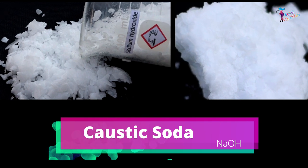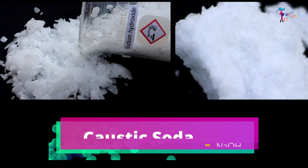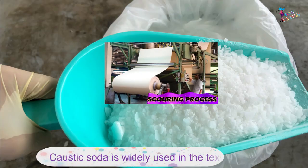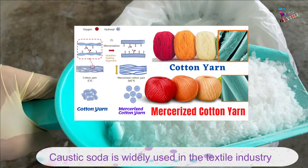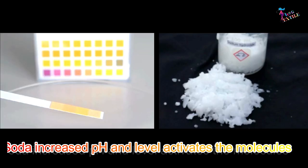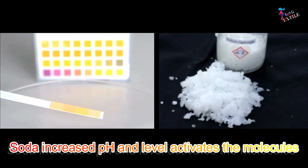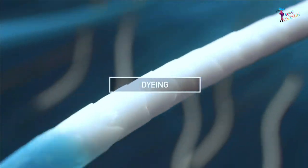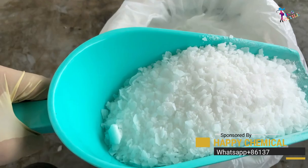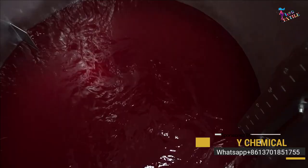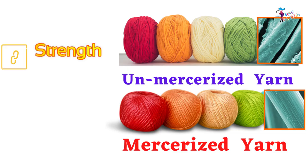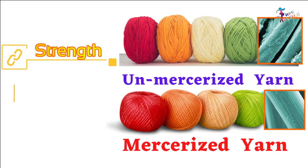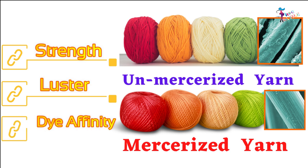Caustic Soda. Caustic soda is widely used in the textile industry for scouring, mercerization, and dyeing processes. Soda increases pH and activates the molecules of the fabric so that they can better absorb the dye. This results in brighter and longer lasting colors. Caustic soda is also used in the mercerizing process to increase the strength, luster, and dye affinity of the fabric.